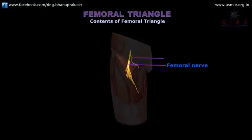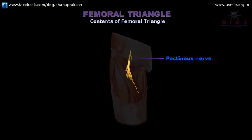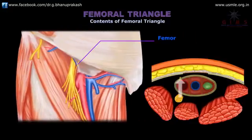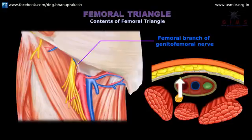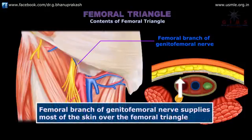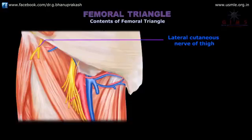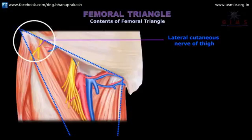The second nerve is the nerve to the pectineus, which arises from the femoral nerve just above the inguinal ligament. After arising, this nerve passes behind the femoral sheath and behind the inguinal ligament to reach the anterior surface of the pectineus, where it gives innervation to the pectineus muscle. The third nerve is the femoral branch of the genitofemoral nerve, which occupies the lateral compartment of the femoral sheath along with the femoral artery and supplies most of the skin over the femoral triangle. The fourth is the lateral cutaneous nerve of the thigh, which crosses the lateral angle of the triangle.